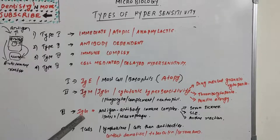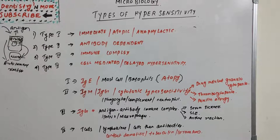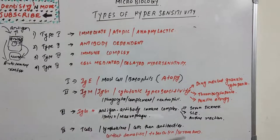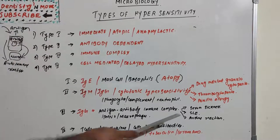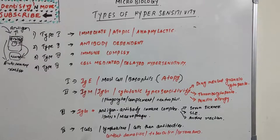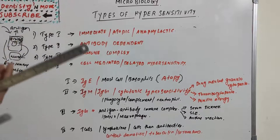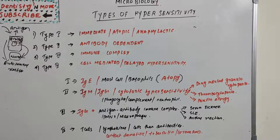Type 3 hypersensitivity involves antigen-antibody immune complexes, which are IgG mediated. Large amounts of antigen and antibodies form complexes in the blood, and if not eliminated, these can be deposited in capillaries or joints and trigger inflammation. The reaction may be general — such as serum sickness — or may involve individual organs, including skin in systemic lupus erythematosus, kidney in lupus nephritis, lungs in aspergillosis, and joints in rheumatoid arthritis.